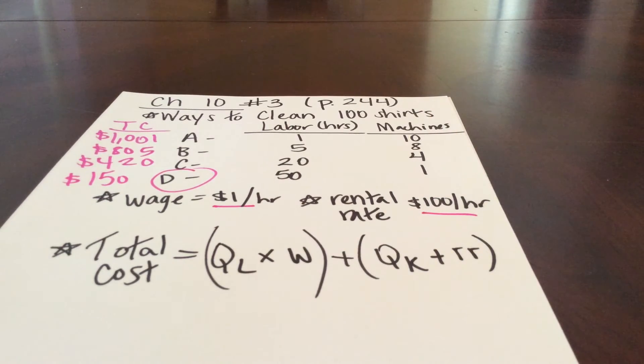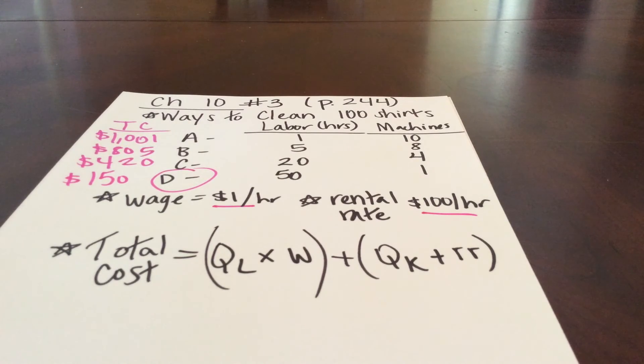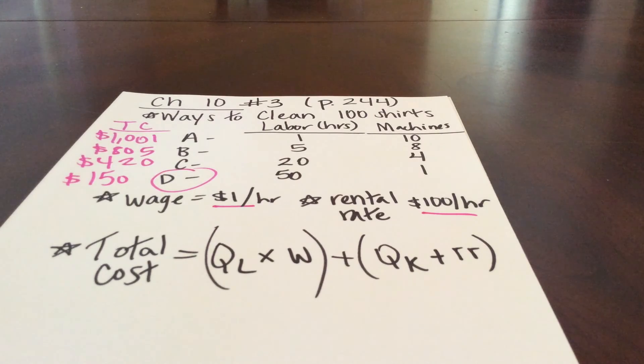In the study plan and in this question, you can also work another part where the wage increases to $5 and the rental rate drops to $50. Please try to work that on your own in MyEconLab.